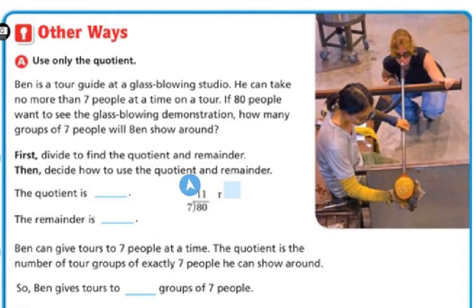Then I'm going to decide how to use the quotient and the remainder. So my quotient is 11, because they've already divided it. So seven going into 80. So seven times 11 is 77. So my quotient is 11. And if I subtract 77 from 80, I get three. So my remainder is three. So Ben can give tours to seven people at a time.